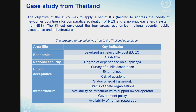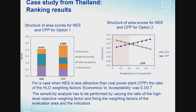Thailand, as a newcomer country, considered only two options: coal power plants and a nuclear energy system. In their base case, the coal power plant had the best score. But during sensitivity analysis, they found a range where the nuclear energy system can be viable and can be implemented.